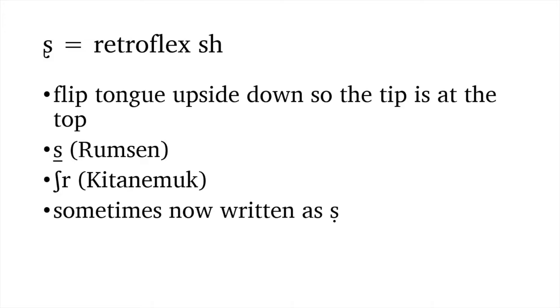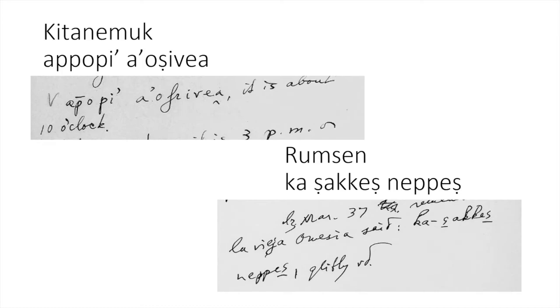So, here we're going to look at retroflex S. That's how it's written in the IPA with a little tail. So, we flip the tongue upside down. So, the tip is kind of touching the palate and you just blow out. It kind of has, like, a whistling sound to it. This is not a common sound in a lot of languages. It shows up in Rumsun. It shows up in Kitanemuk. But, nowadays, it's usually written with an S with a dot under it.